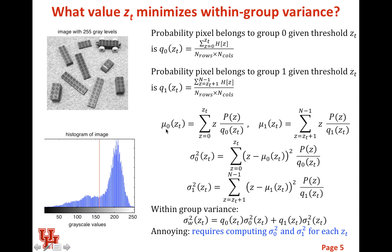Our mean value for the background, we just multiply our Z value, every possible Z value times the probability of that Z value, and then we divide that by Q0. That gives us the mean value in the background and the mean value in the foreground. Then we can substitute for Z the quantity Z minus the mean value, and if we square that value, it gives us our variance. Our within-group variance is just we multiply the probability that it belongs to the background times the variance of the background, plus the probability that it belongs to the foreground times the variance of the foreground.